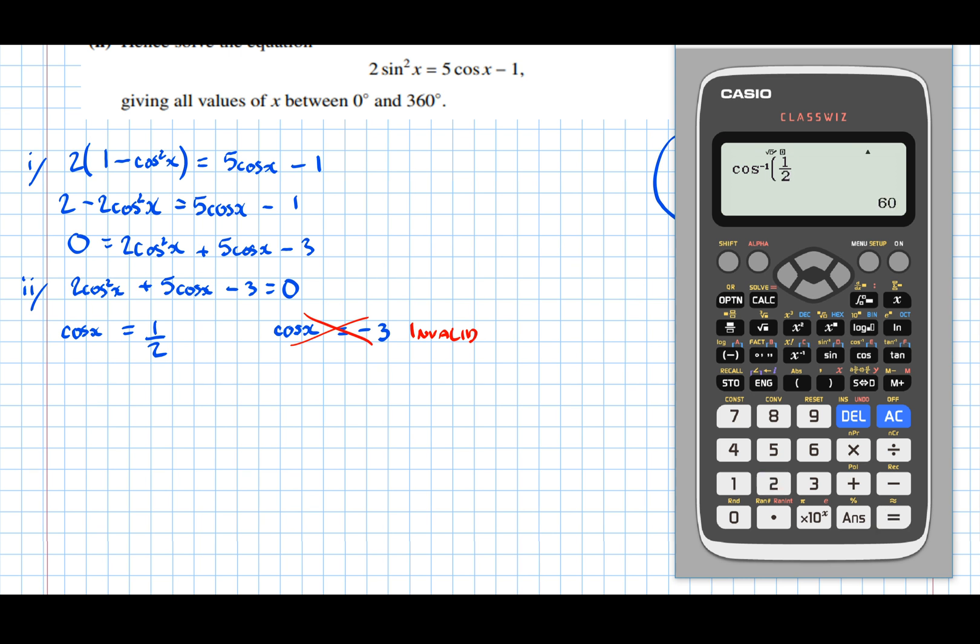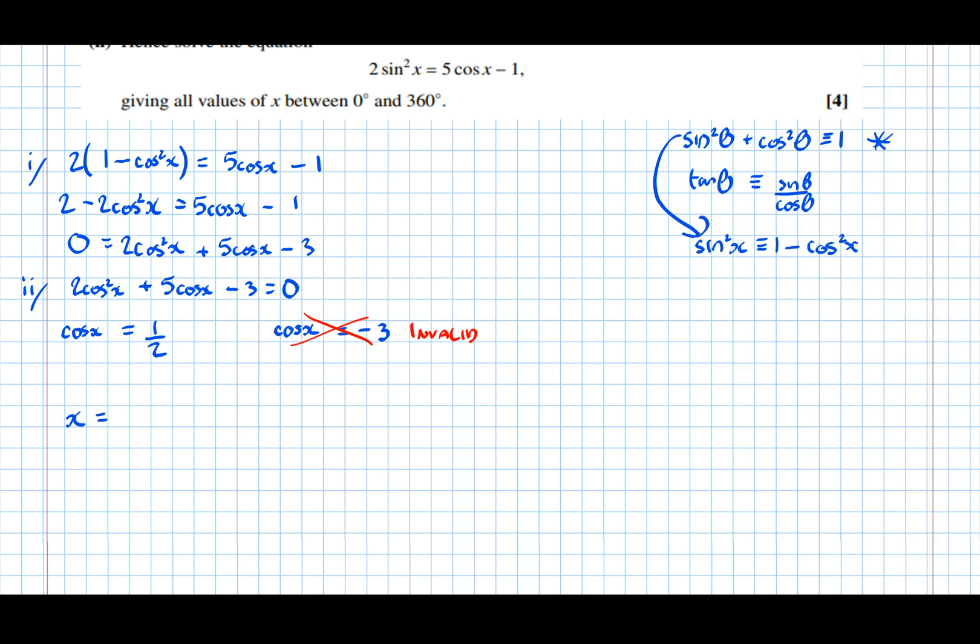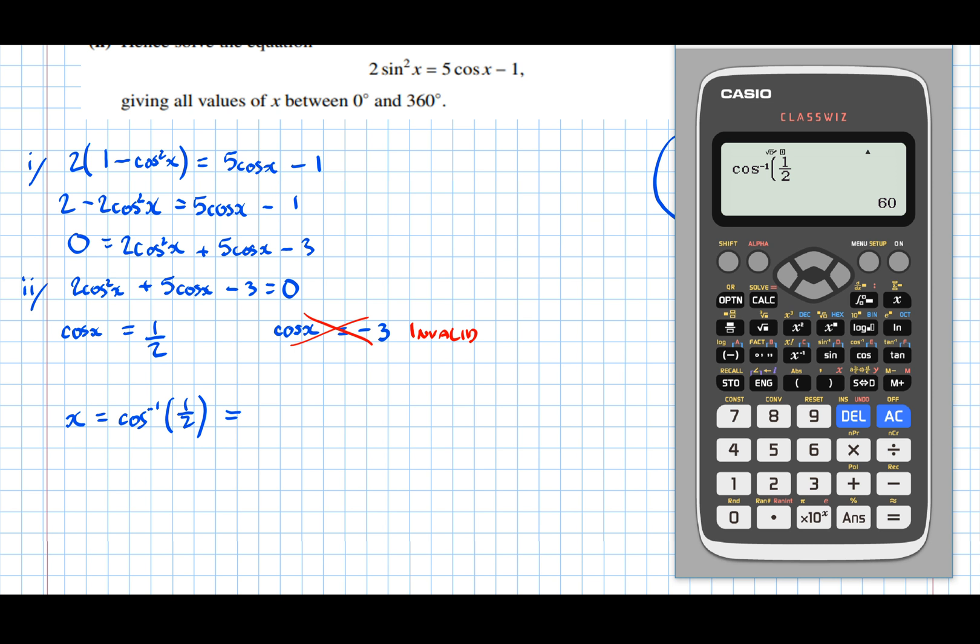So, inverse cos of 1 half. To get our first solution, which is 60 degrees, so inverse cos of 1 half. So, x equals the inverse cos of 1 half, which is equal to 60 degrees.